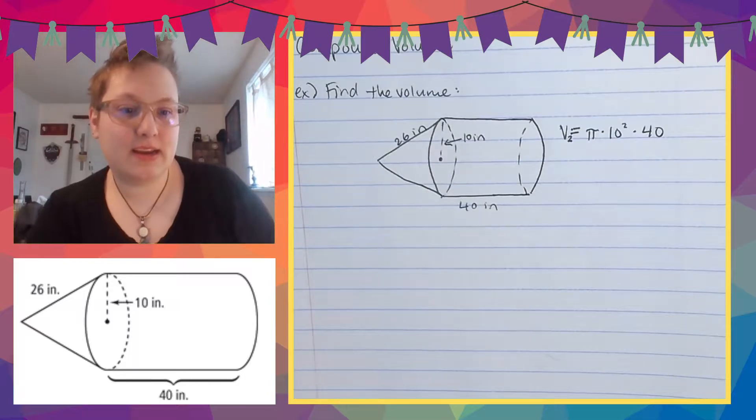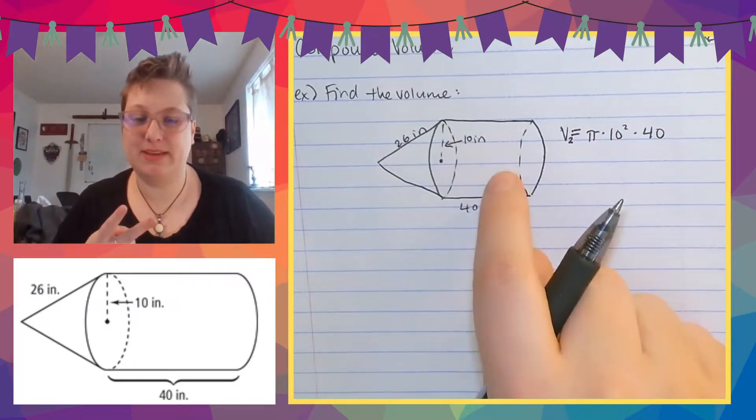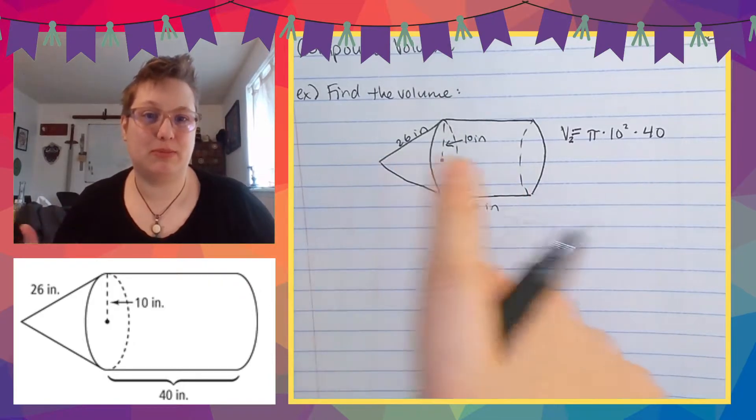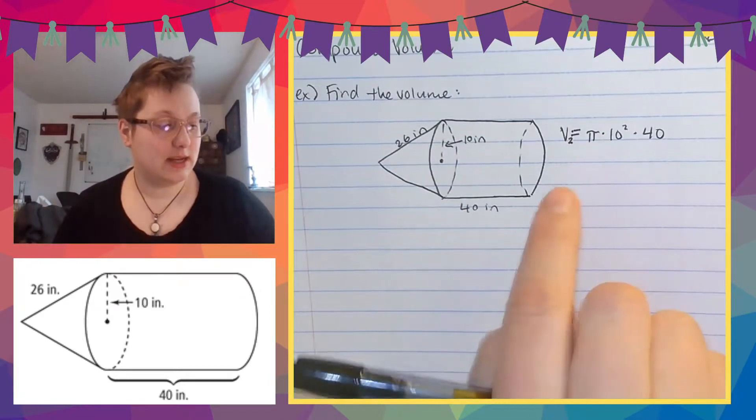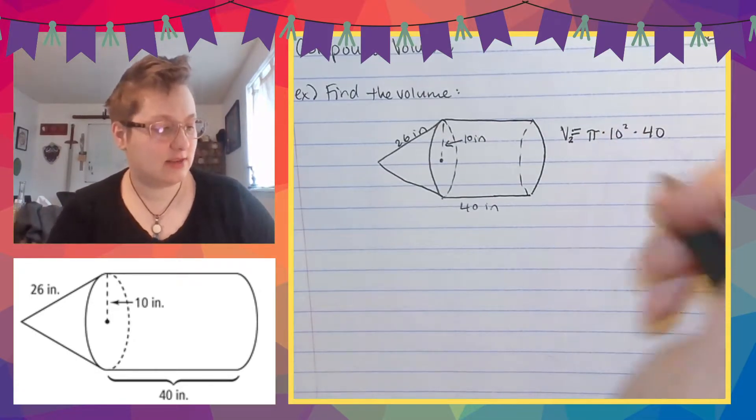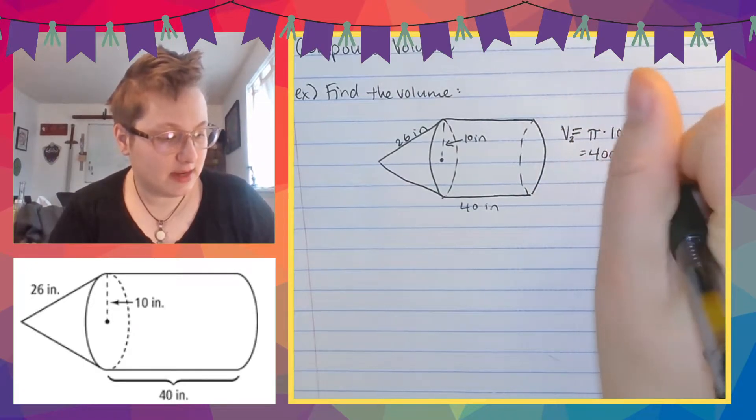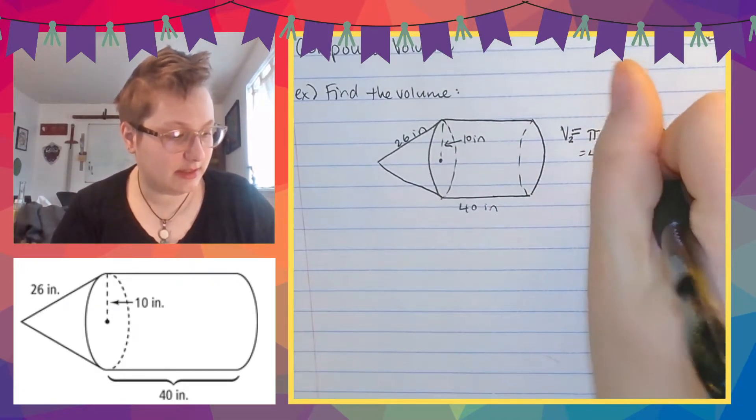So now I called this volume two, which means it's the second part of the volume. So what we're going to do is we're going to take volume one plus volume two and add them together. Now this is pi times 10 squared times 40. 10 squared is 100, 100 times 40 would be 4,000. So this is 4,000 pi. And these were all in inches. It'll be cubic inches.